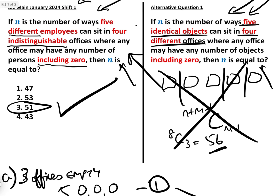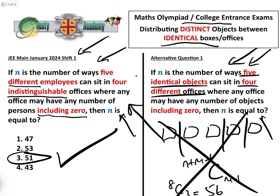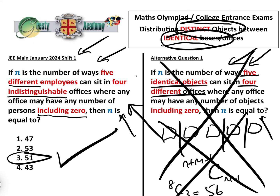Remember: distinct objects into identical boxes — don't use stars and bars. Everybody does, and everybody gets it wrong. Hope you found this useful. If you have, please press the thumbs up button to like the video and subscribe to the Gresty Academy YouTube channel.